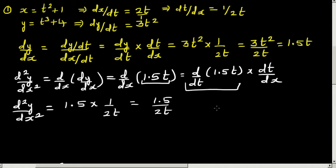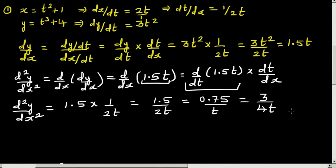And that's the answer. Simplifying 1.5 over 2t: 1.5 over 2 is 0.75, so this is 0.75 over t. Or equivalently, that is 3 over 4t. So the second derivative of this function is 3 over 4t.